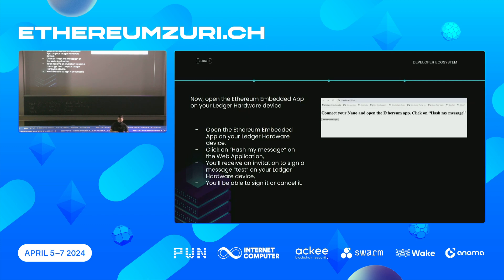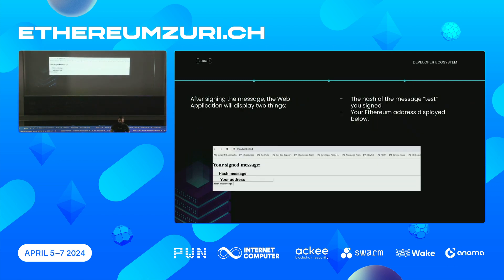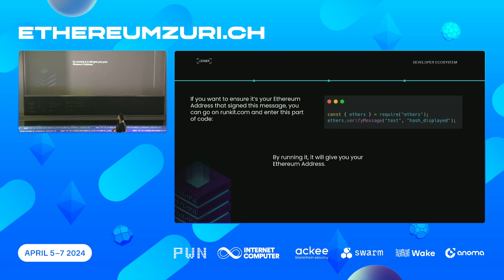Depending on what you want to do on the hardware device, you first have to think about the behavior. For this workshop: open your hardware device, open the Ethereum app, click 'hash my message' on the web app — you'll receive a message to sign on your hardware device, and you can sign it or cancel it. After signing, the web app will display the hash of your message and your Ethereum address. To verify, you can go on runkit.com, enter two lines replacing the hash with what you got, and it should retrieve your Ethereum address.